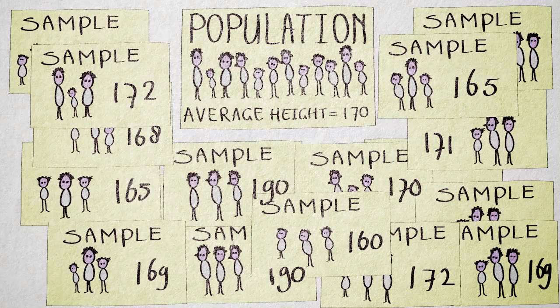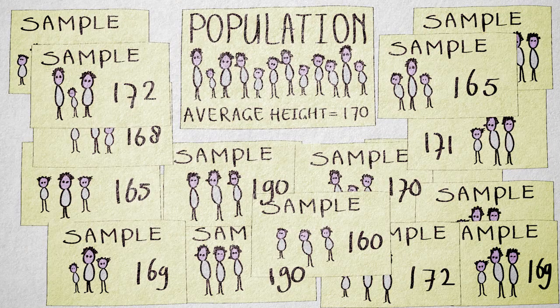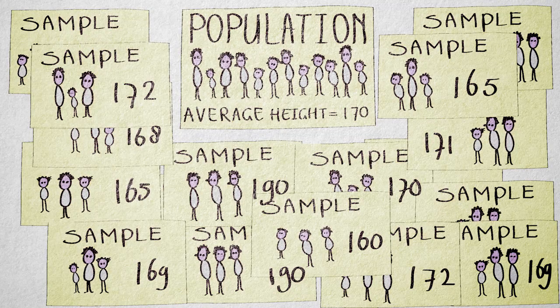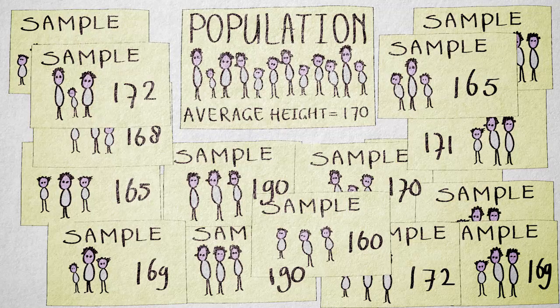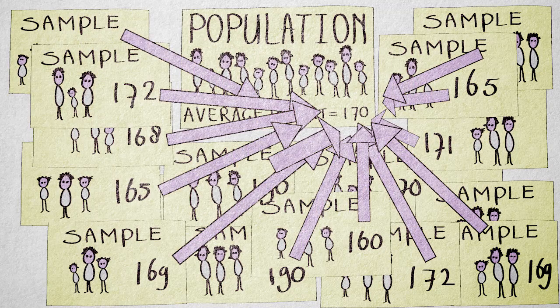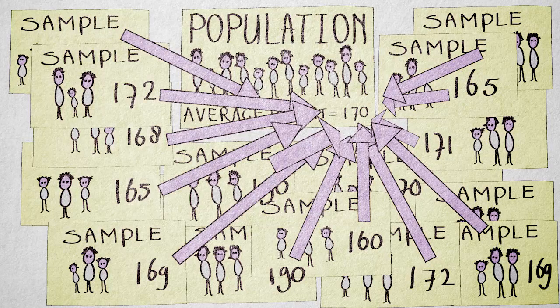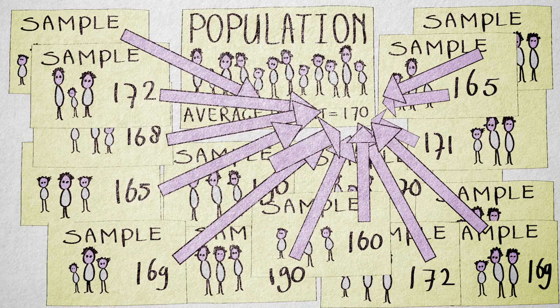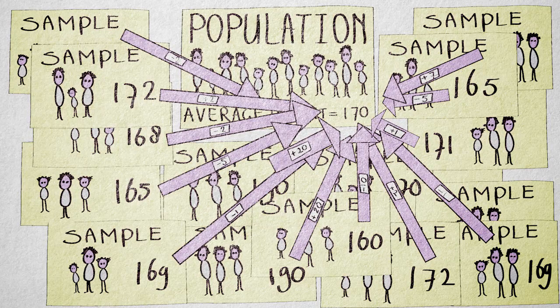If we would take an infinite number of samples from a population, then under certain conditions, the average sample value of all these samples will correspond to the population value. But of course, individual samples will result in sample values that are different from the population value.